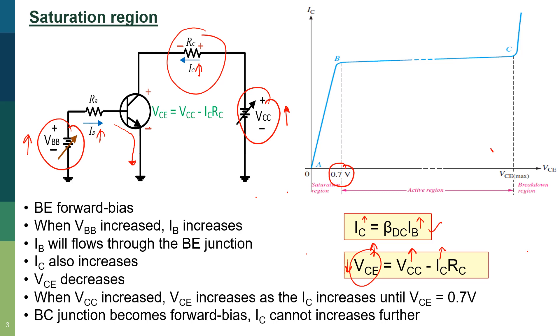At this point, the BC junction becomes forward biased and IC cannot increase further, even if we continue increasing the base current. At this point, this formula is no longer valid because the VCE is already at its saturation value. This is the saturation region.